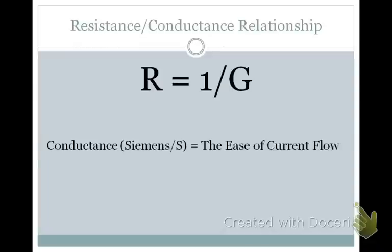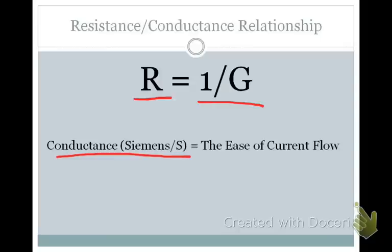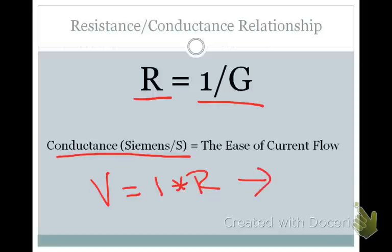Resistance and conductance are the inverse of each other, so resistance equals one over conductance (abbreviated G). Conductance is measured in Siemens and represents the ease of current flow. You can also think about conductance in terms of the number of channels open at any one time. Later in this lecture, we'll talk about relative conductance — how many sodium ions flow relative to potassium ions. You can also plug conductance into Ohm's Law: voltage equals current over conductance.